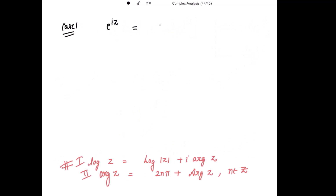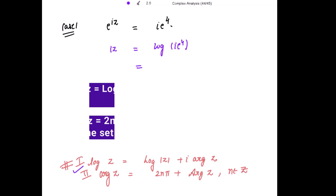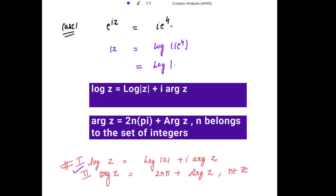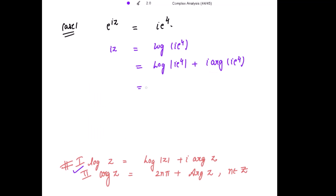Taking Case 1 first: when e to the power iota z equals iota e to the power 4, we write iota z equal to log of iota e to the power 4, which equals log of the modulus of iota e to the power 4 plus iota times the argument of iota e to the power 4. The modulus equals the square root of the real part squared plus imaginary part squared, giving square root of e to the power 8, which is e to the power 4.